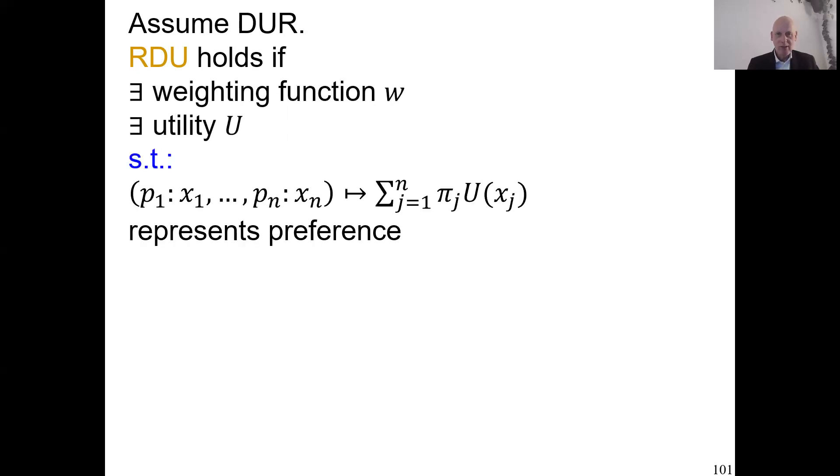So now, after defining this theoretical concept, we're going to define rank-dependent utility in a formal sense. And to be sure, I repeat here, we are here assuming decision under risk. We have objective probabilities, probability distribution over money. Those are the prospects that we choose from. And in that situation, we say rank-dependent utility holds if there exists a weighting function, there exists a utility function such that we have the following evaluation of a prospect. Here I write it. So this is the general prospect. This is the formula evaluating. And I have to explain a bit more about this formula.